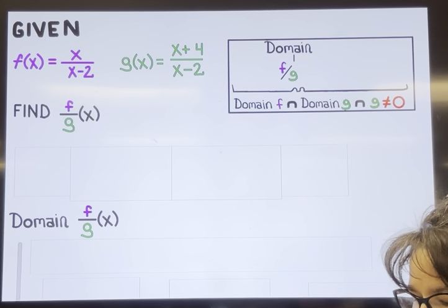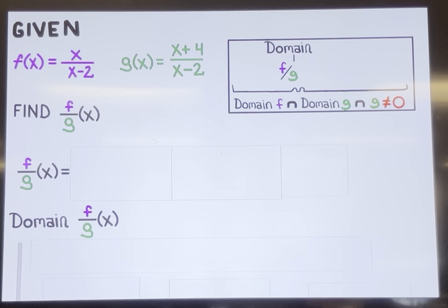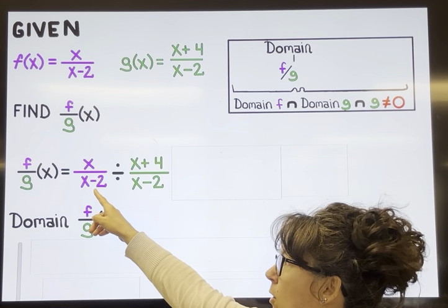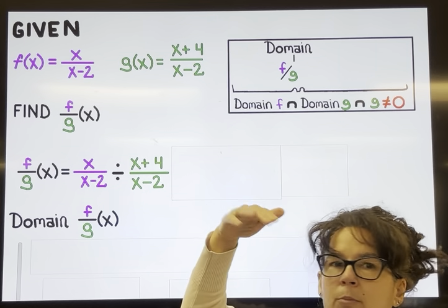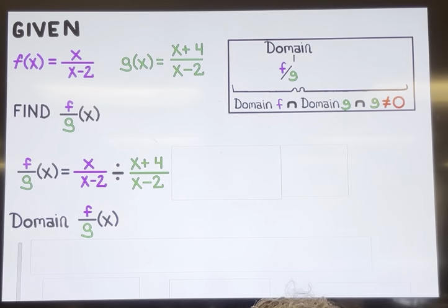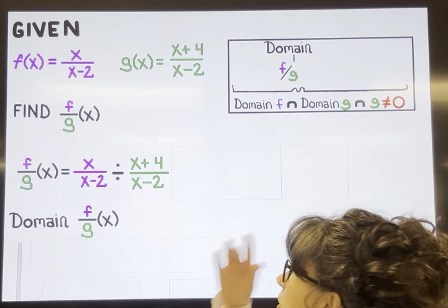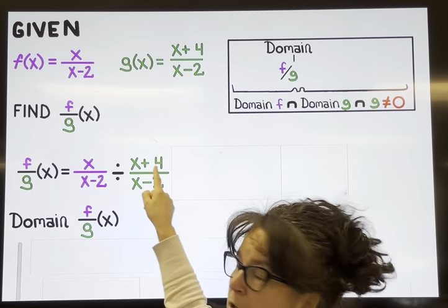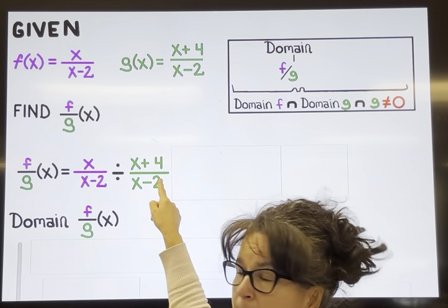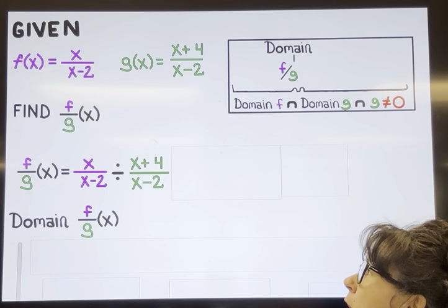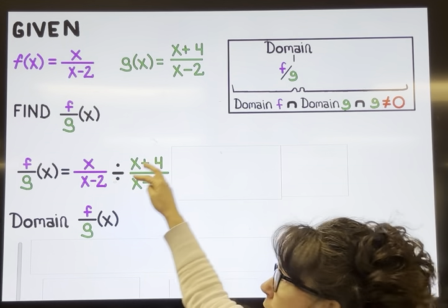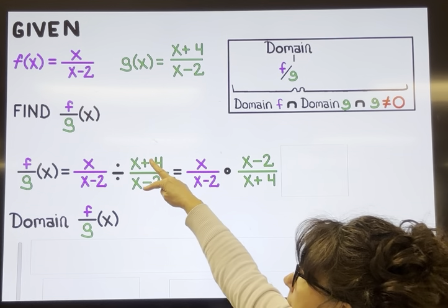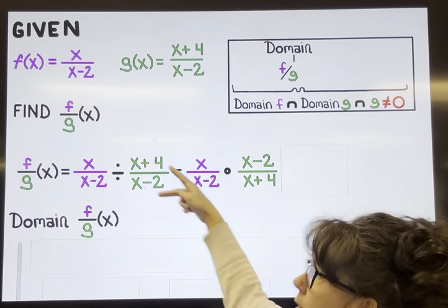Step one: find f divided by g of x. We take the f function — the purple one — divided by g. When dividing fractions, we turn this into multiplication and take the reciprocal of the second one, so we multiply the purple function by the flipped version of g.